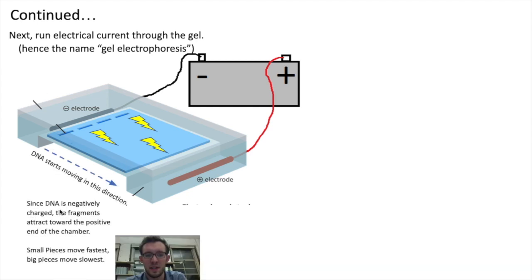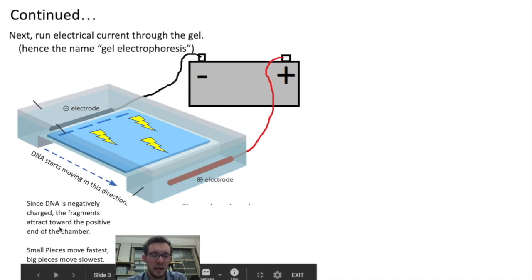Specifically, because DNA has negative charges to it, its phosphate backbone has negative charges, the DNA will attract toward the positive end of the electrophoresis machine. You can see the pieces that were started in the wells are now moving slowly toward the positive electrode. And so the smaller a piece is, the faster it will move through the electrophoresis machine, and the larger a piece is, the slower it will move. It'll take longer for it to move through the gel.